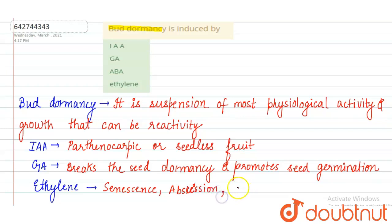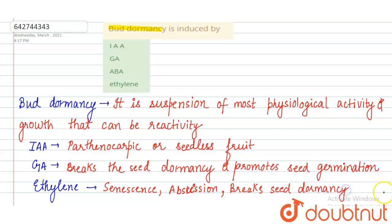Ethylene also breaks seed and bud dormancy.